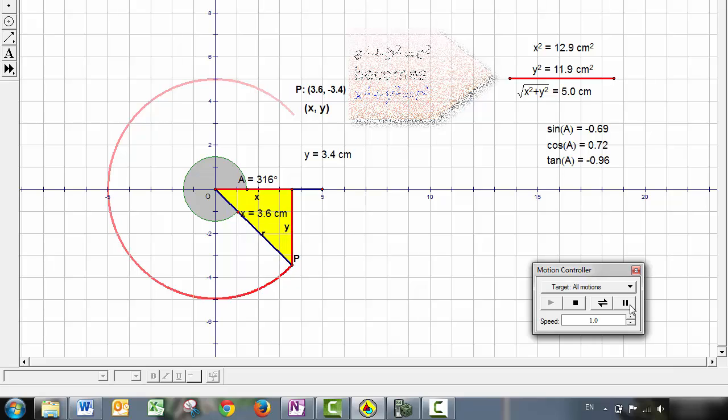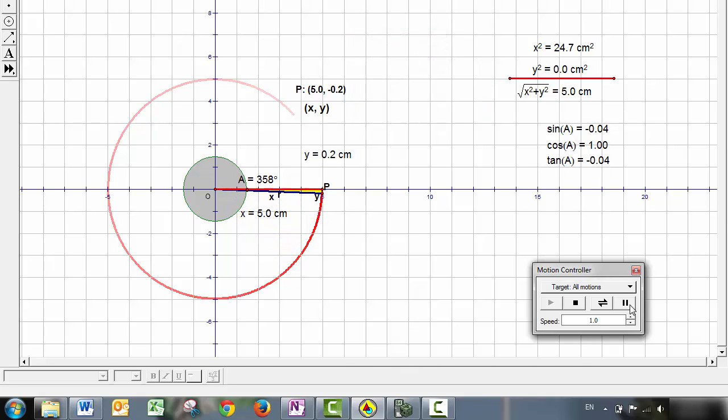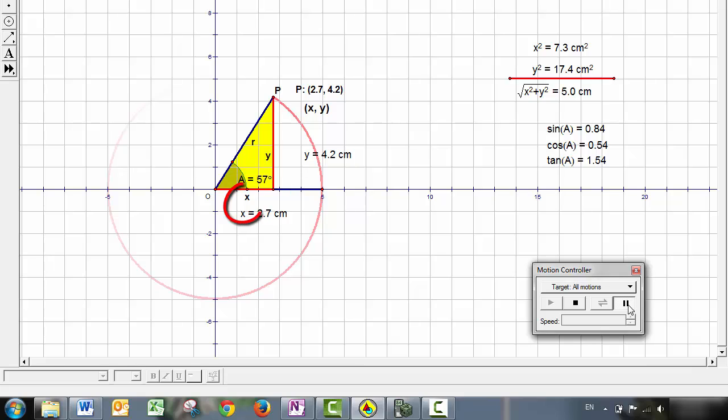Now, if you consider the right triangle that we've got here and the way we used to do trigonometry, what we used to call the opposite side is really just Y. The adjacent side is X, and the hypotenuse is R. So by using the values X, Y, and R in place of opposite, adjacent, and hypotenuse, we can update our previous definitions of sine, cosine, and tangent.